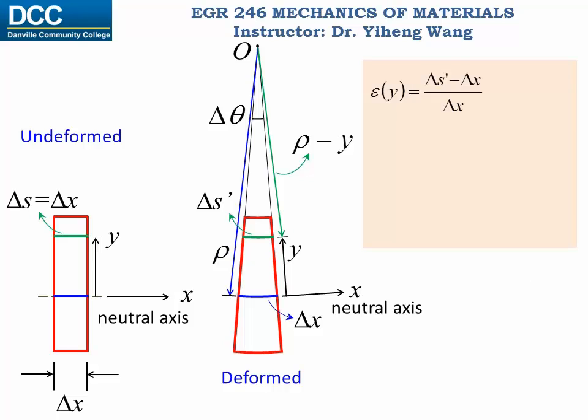If we substitute in delta s prime and delta x as length of arcs that we derived earlier, and cancel out delta theta, we got the normal strain epsilon at arbitrary location y equals to negative y over rho.